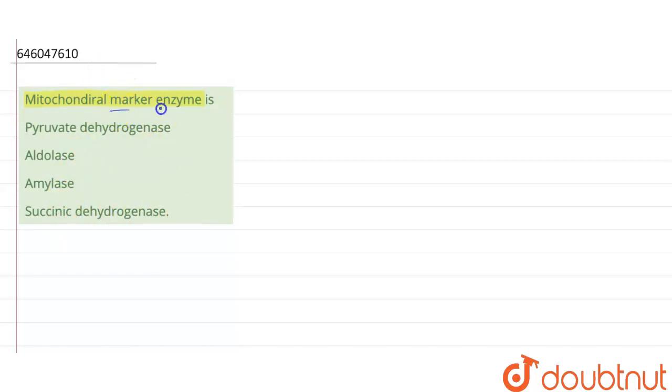Marker enzymes are basically a type of cell biomarker which is used to characterize a certain cell type. For example, if we have to isolate certain cell component or certain cell organelle,